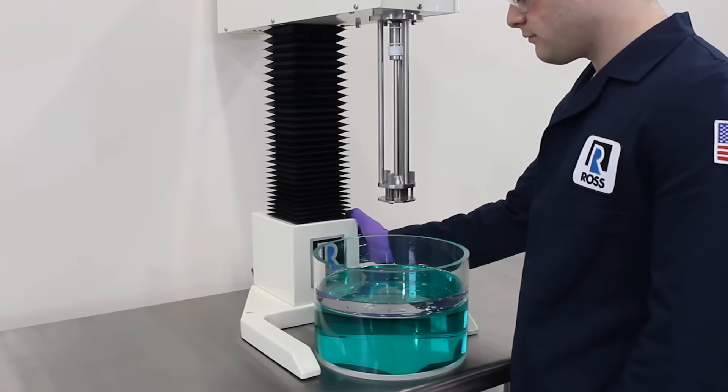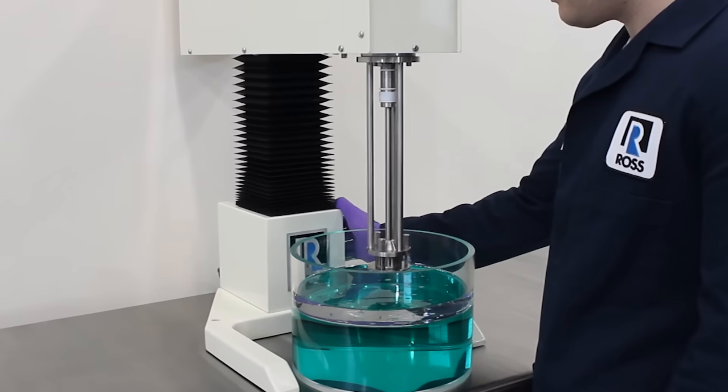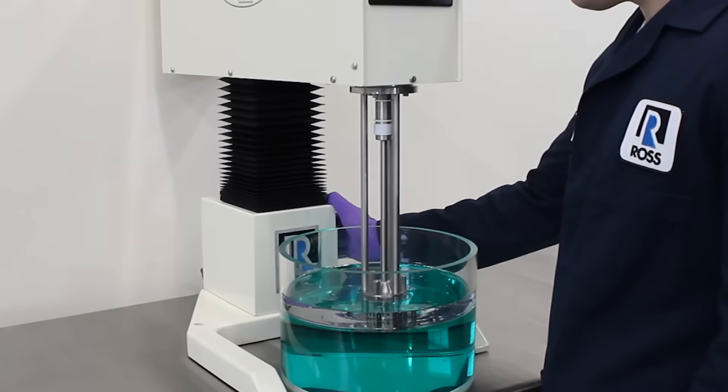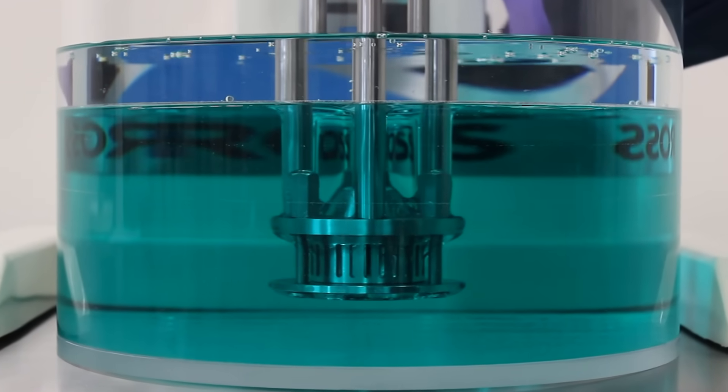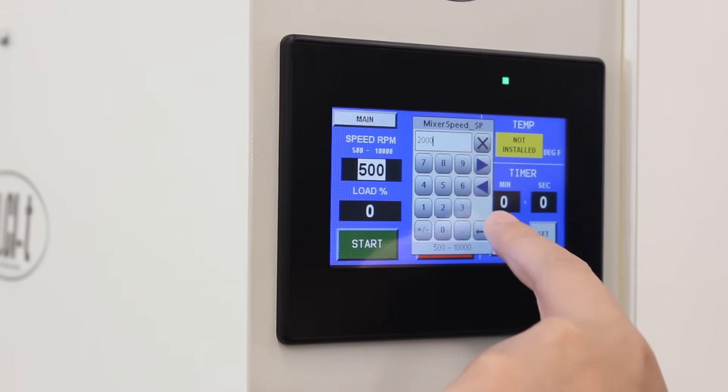Using the Ross High Sheer Mixer is simple. First, lower the agitator assembly into the mix zone about three inches from the bottom. An operator then enters the desired speed and presses start.